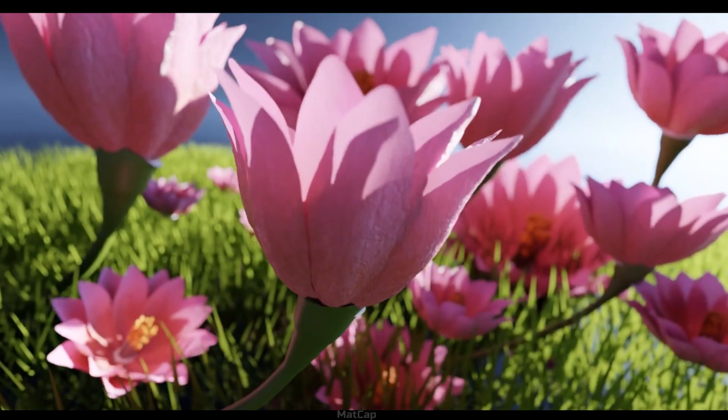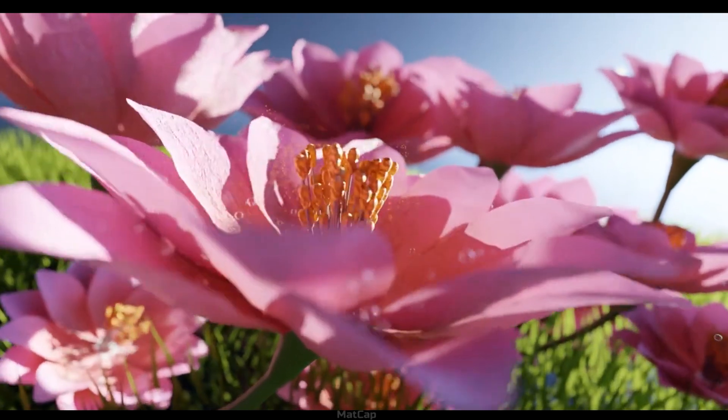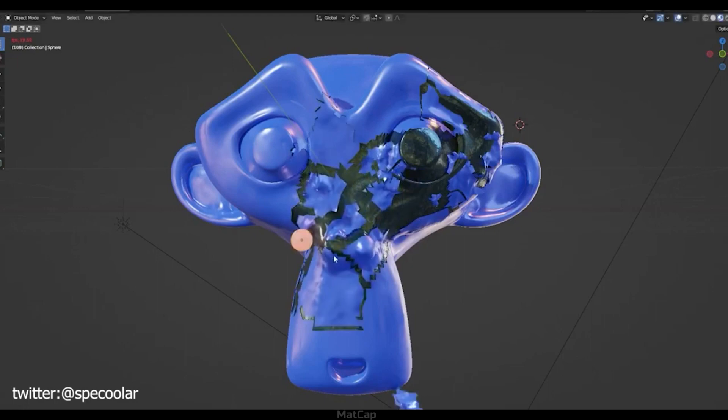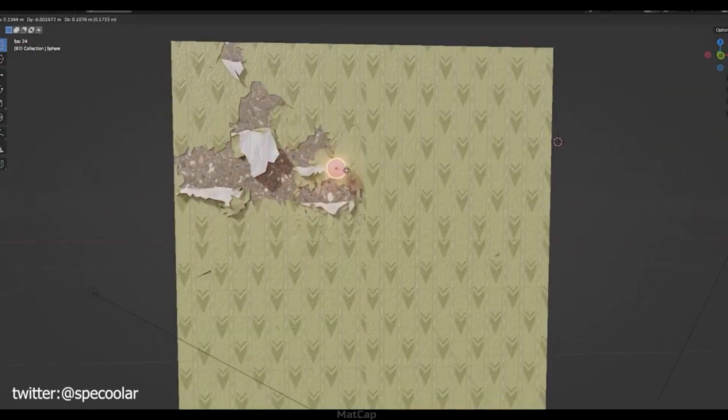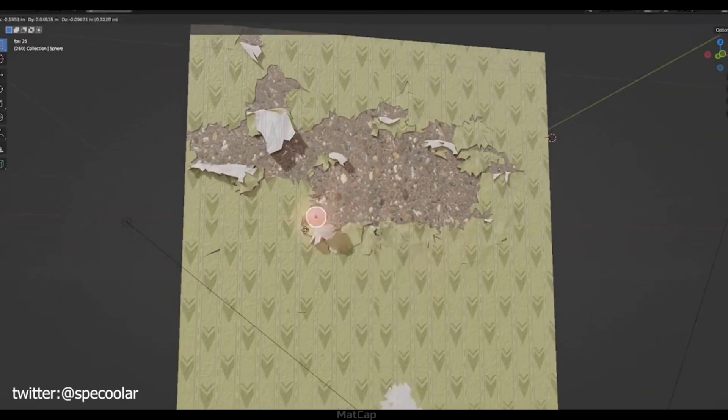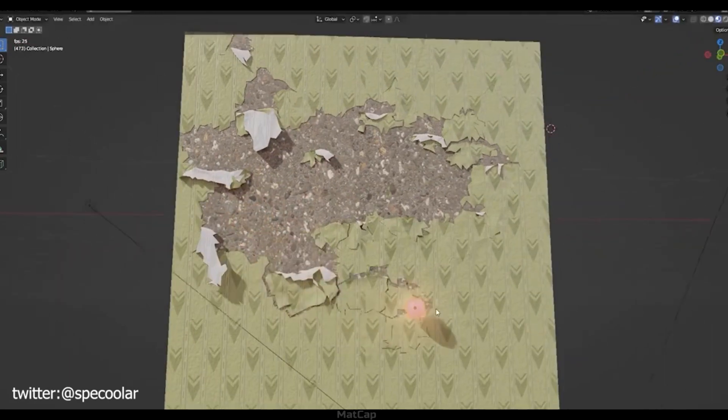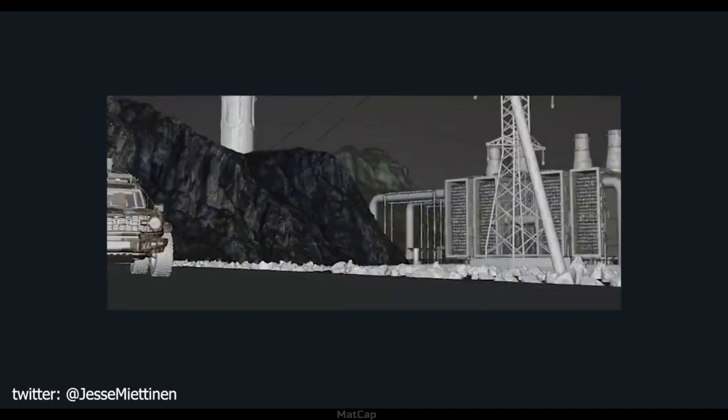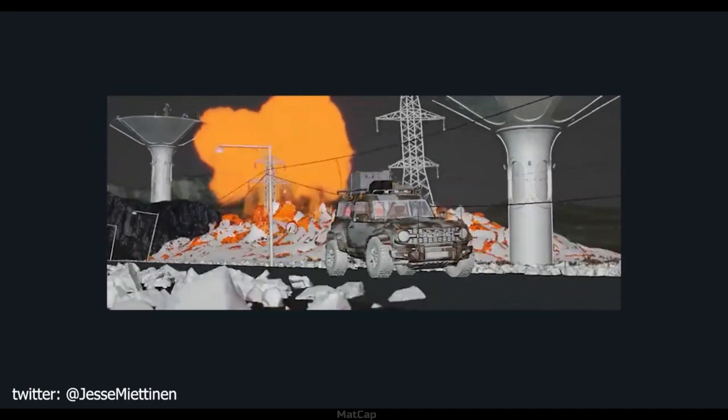The working principle of Blender's Geometry Nodes is comparable to the industry standard of procedural generation, Houdini. Procedural generation means that you can create your own fully customizable operations that will automatically work on any object. As I mentioned earlier, this is very useful when creating complex scenes.